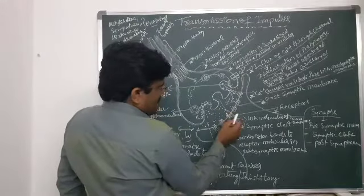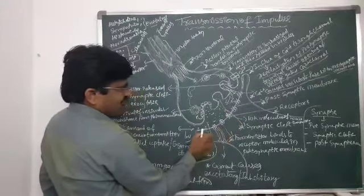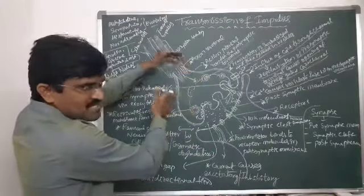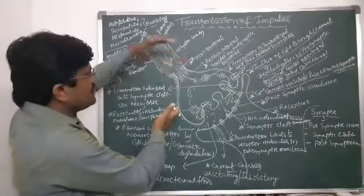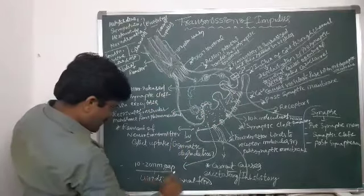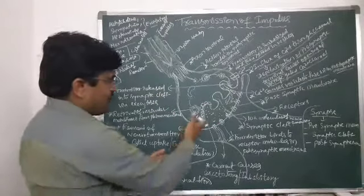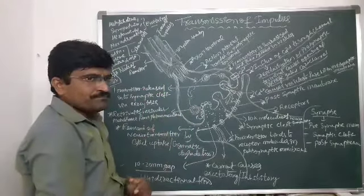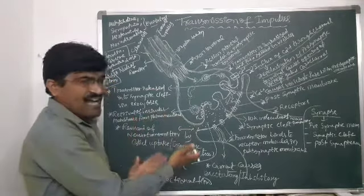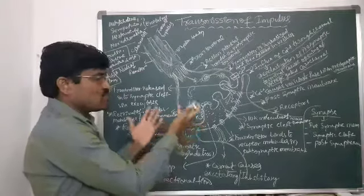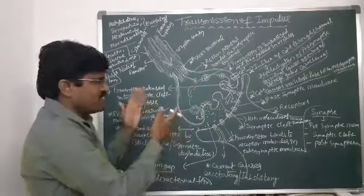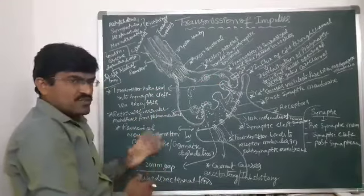The postsynaptic membrane has specific types of receptors on the dendrites of the further neuron. When the axon terminal of one neuron attaches near the dendrite, there is a gap of approximately 10 to 20 nanometers observed in chemical-type transmission cases. In electrical impulse transmission, the gap is very small and there is no necessity of a neurotransmitter.